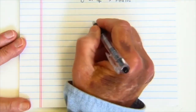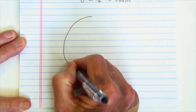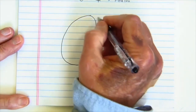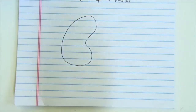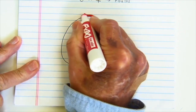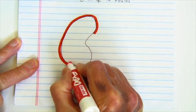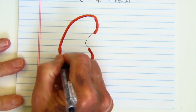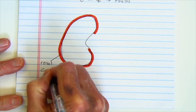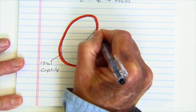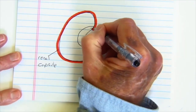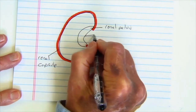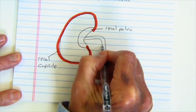Let's take a look at a kidney. The kidney is going to have an outer covering called the renal capsule. Then this dilated portion of the kidney is going to be called the renal pelvis. The renal pelvis is going to empty out through a tube called the ureter.